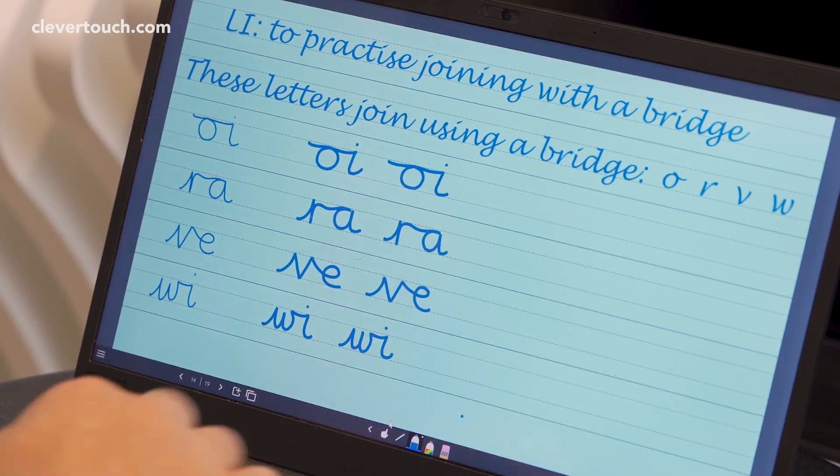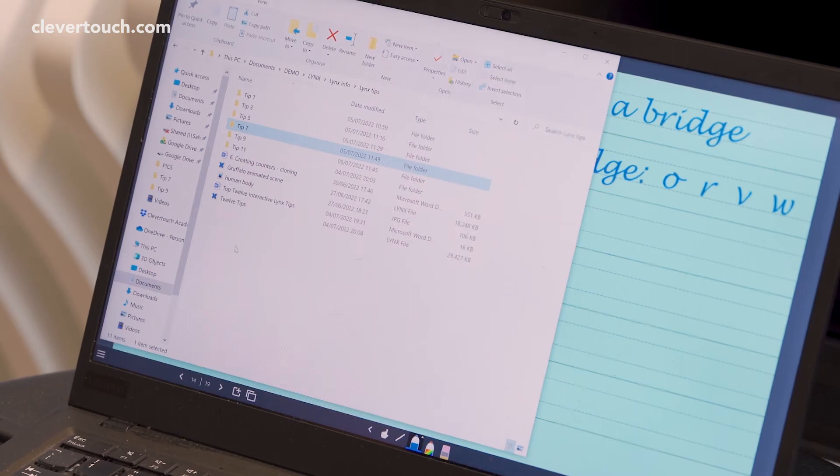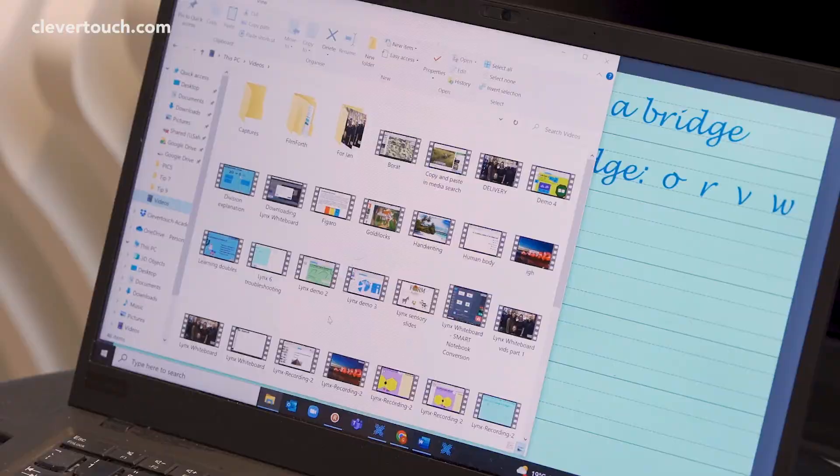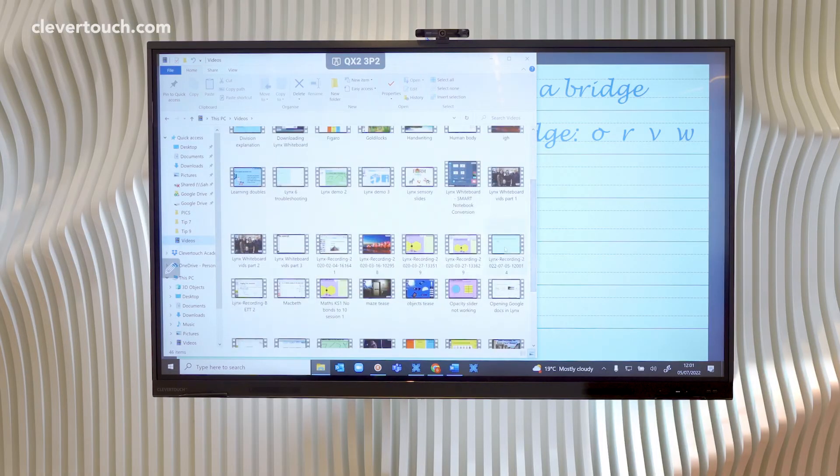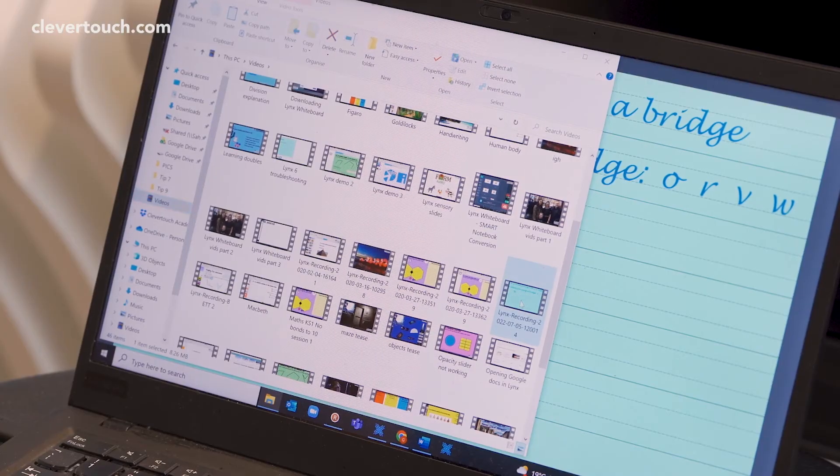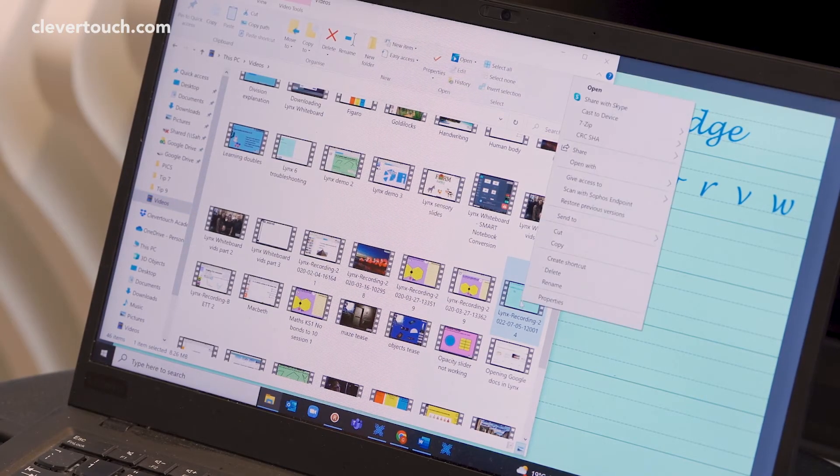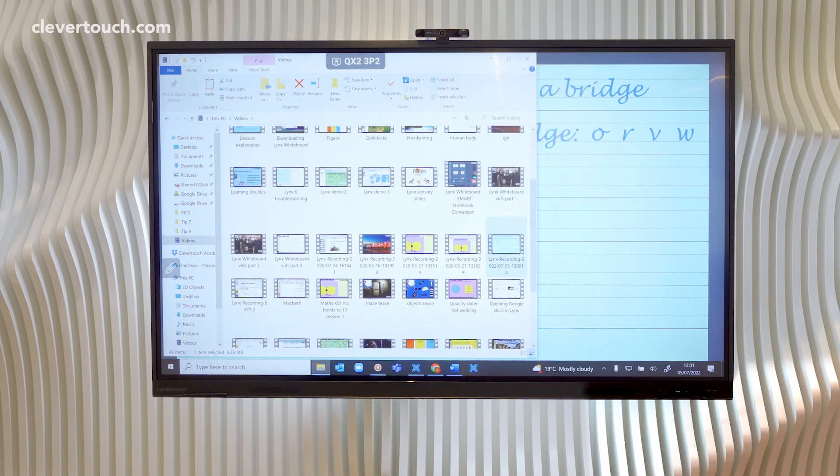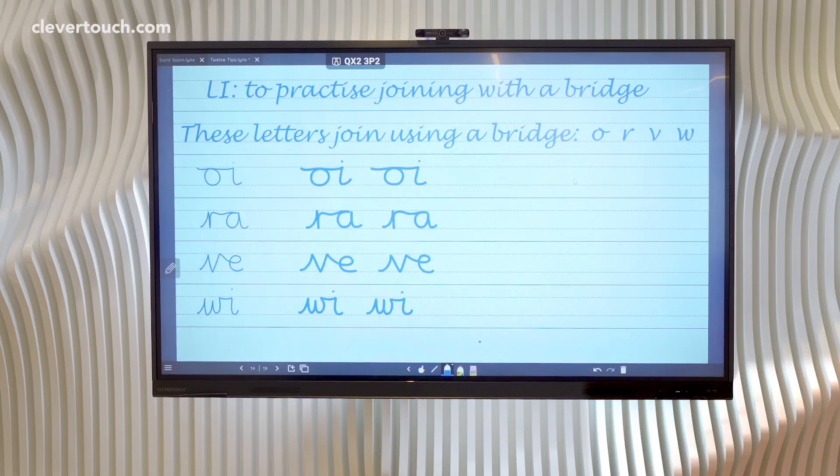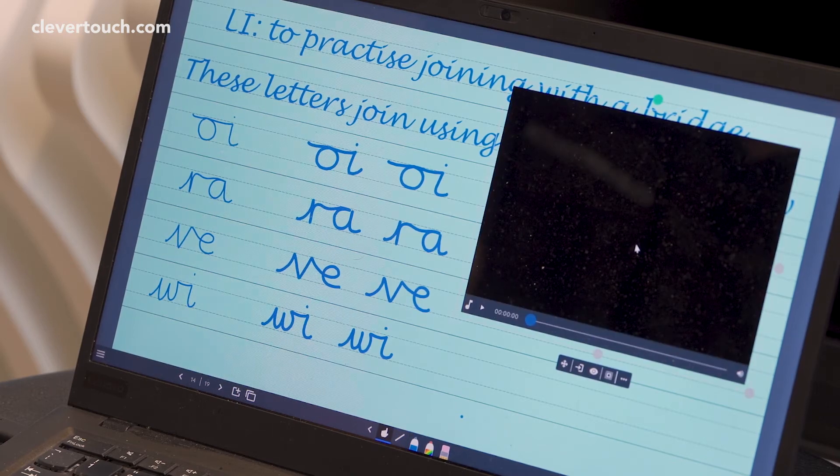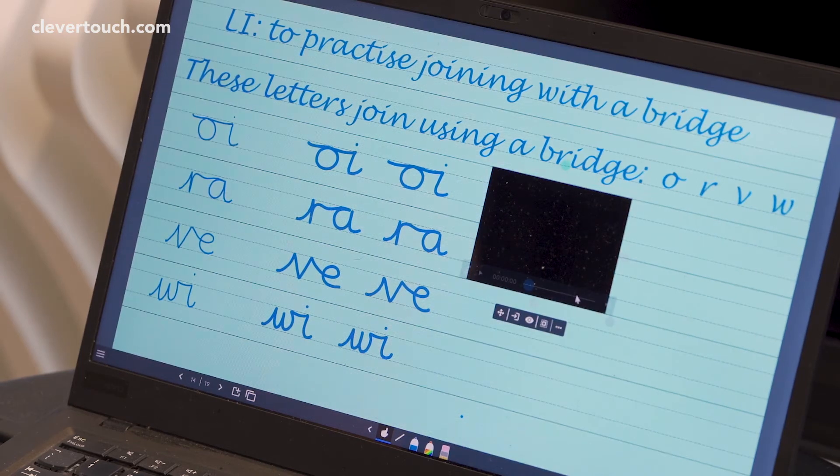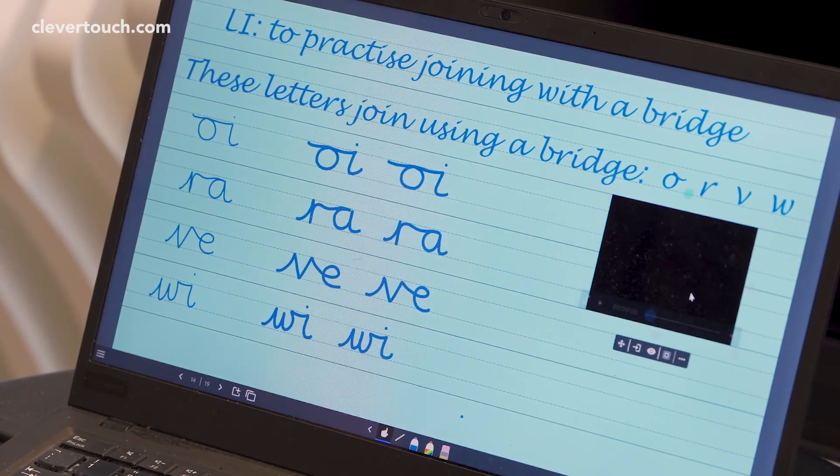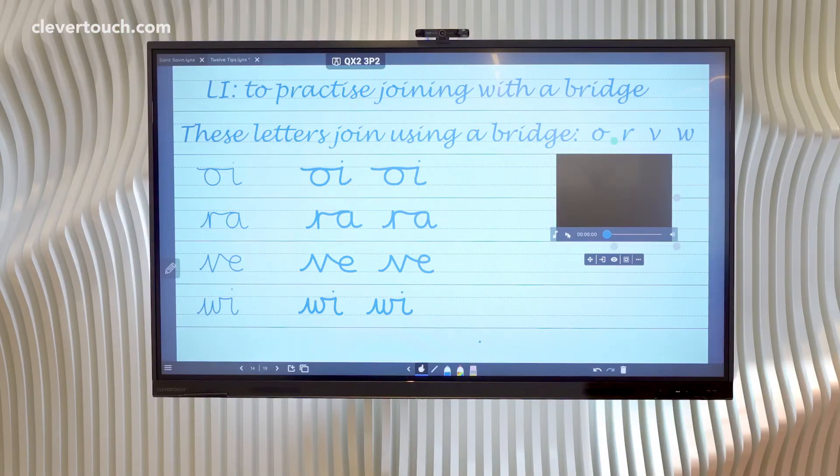I'm going to go out to my videos area and I'm going to find that recording that I just made that was demonstrating the handwriting. I'm going to right-click, copy it, go back to Links, right-click and paste it. It might put it onto the screen rather large, but I can resize that and shrink it down.